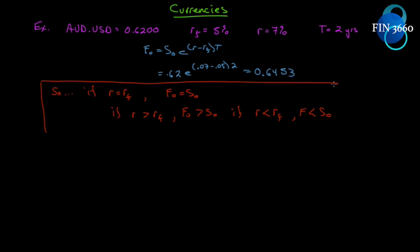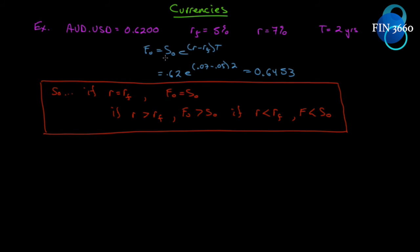If the domestic interest rate is greater than the foreign interest rate, the futures price will be greater than the spot price. If the domestic interest rate is less than the foreign interest rate, the futures price will be less than the spot price — simply because of what happens in the power term. And depending on the distance of the spread between the futures price and the spot price, we can tell how far apart those rates happen to be.